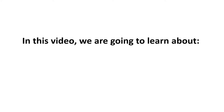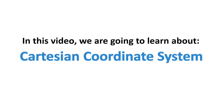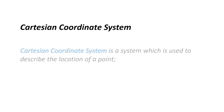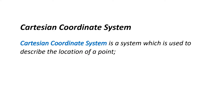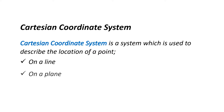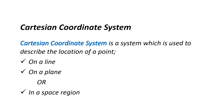Hello everyone, I am Zahid Abbas. In this video we are going to learn about the Cartesian coordinate system. The Cartesian coordinate system is a system which is used to describe the location of a point on a line, on a plane, or in a space region.